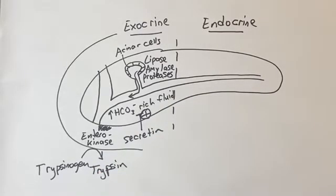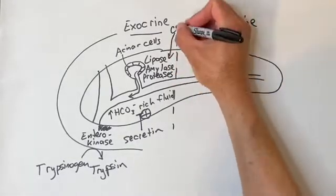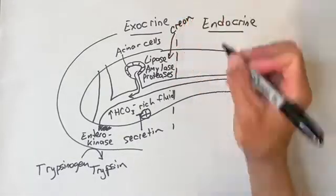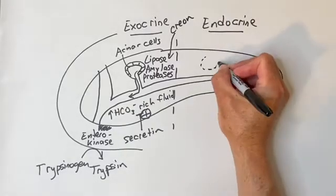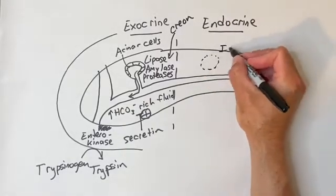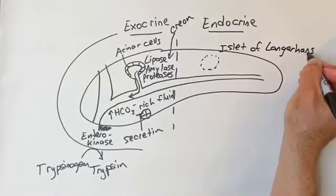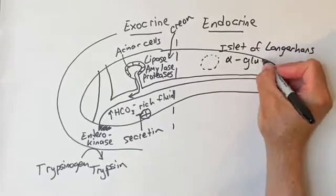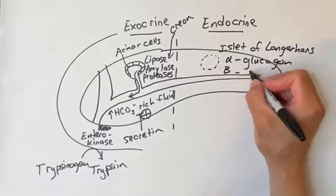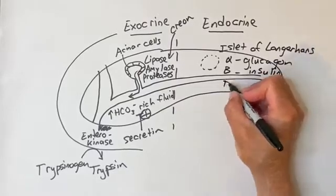Deficiency of lipase production can be counteracted with oral pancreatic lipase pills known as Creon. The endocrine function of the pancreas involves the islets of Langerhans, which are only about 5% of the mass of the pancreas. The islets of Langerhans contain beta cells which make insulin, alpha cells which make glucagon, and delta cells which make somatostatin.